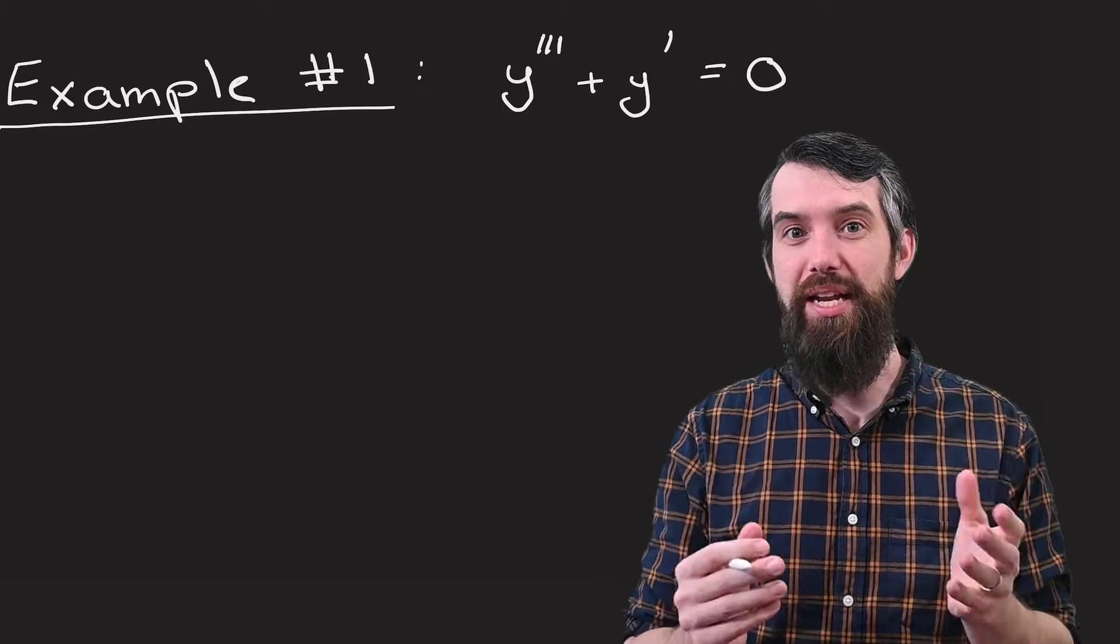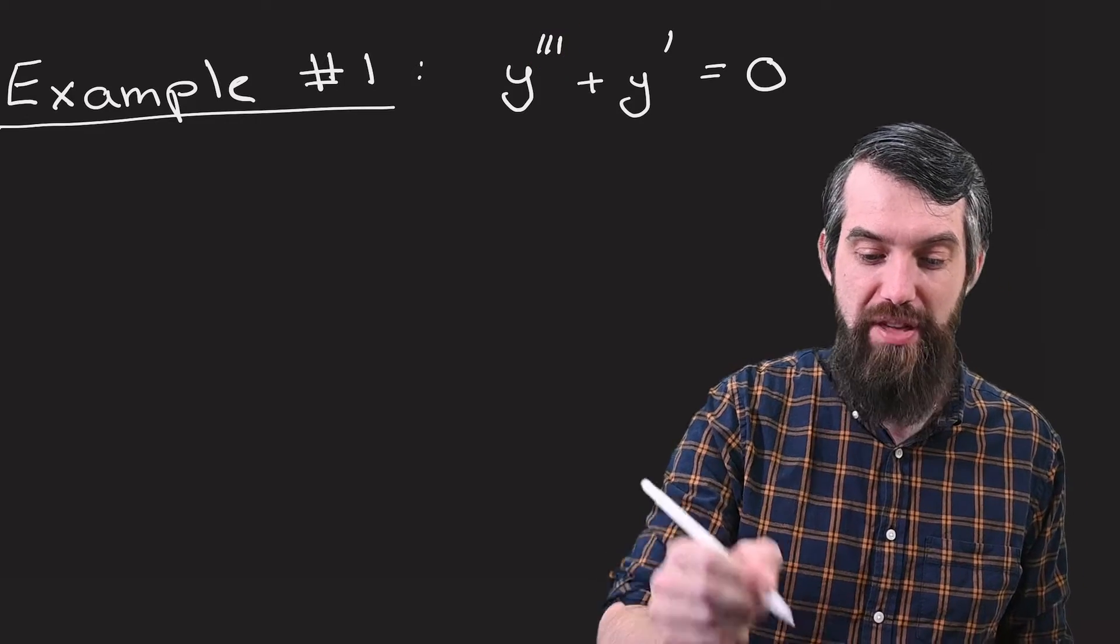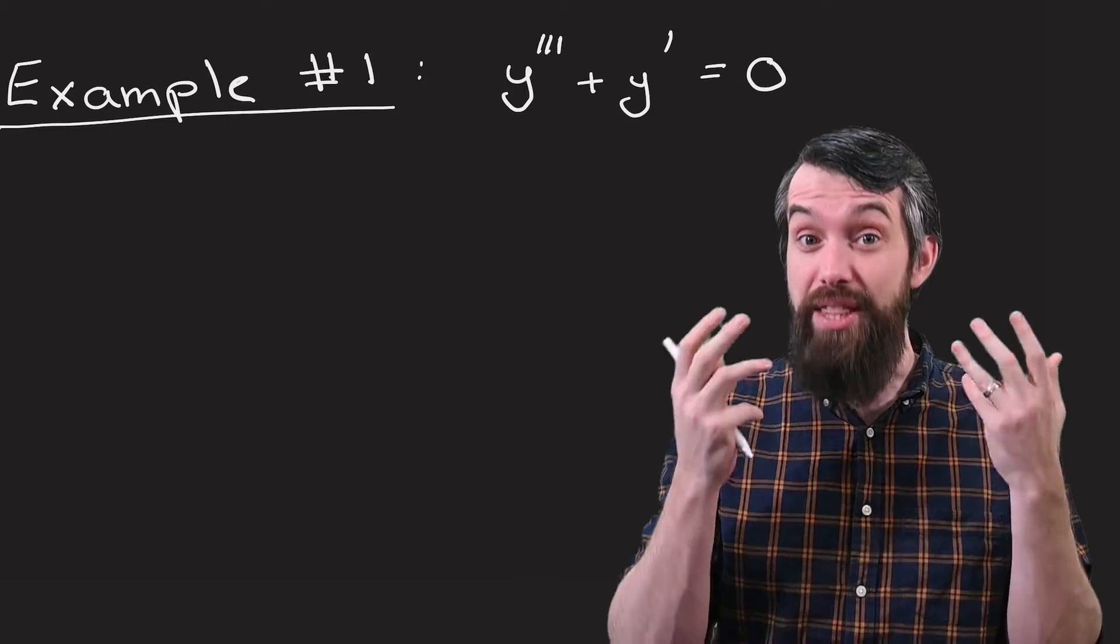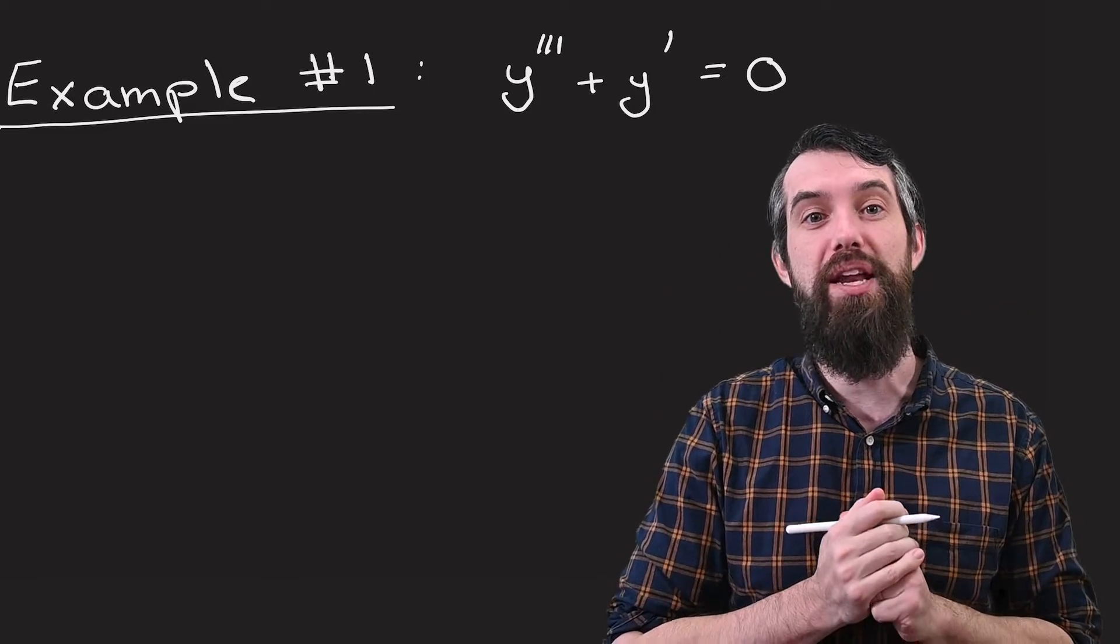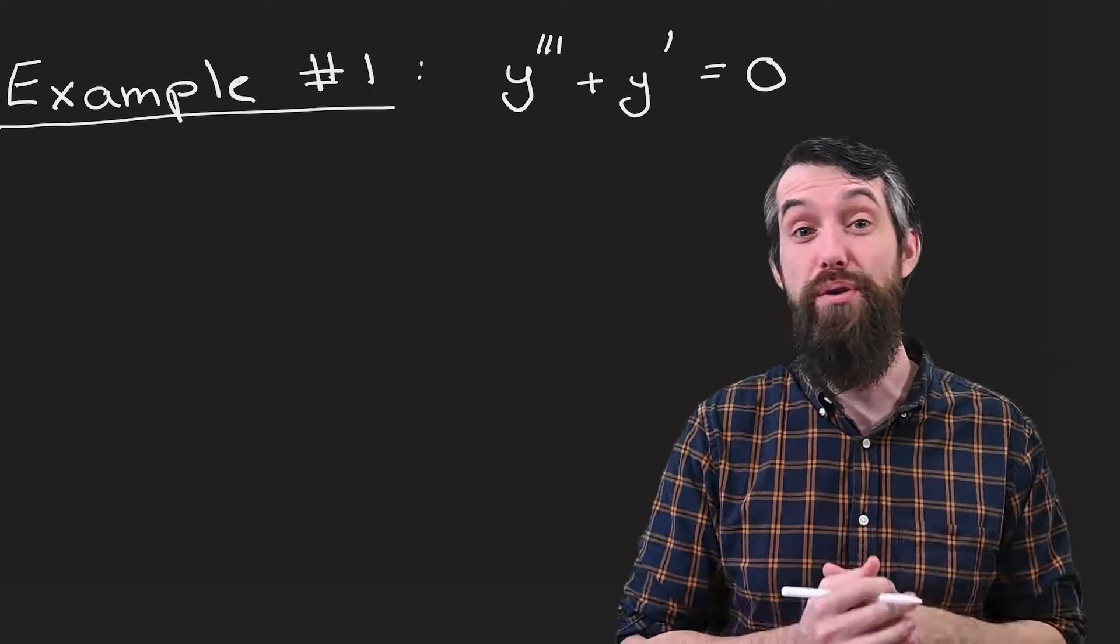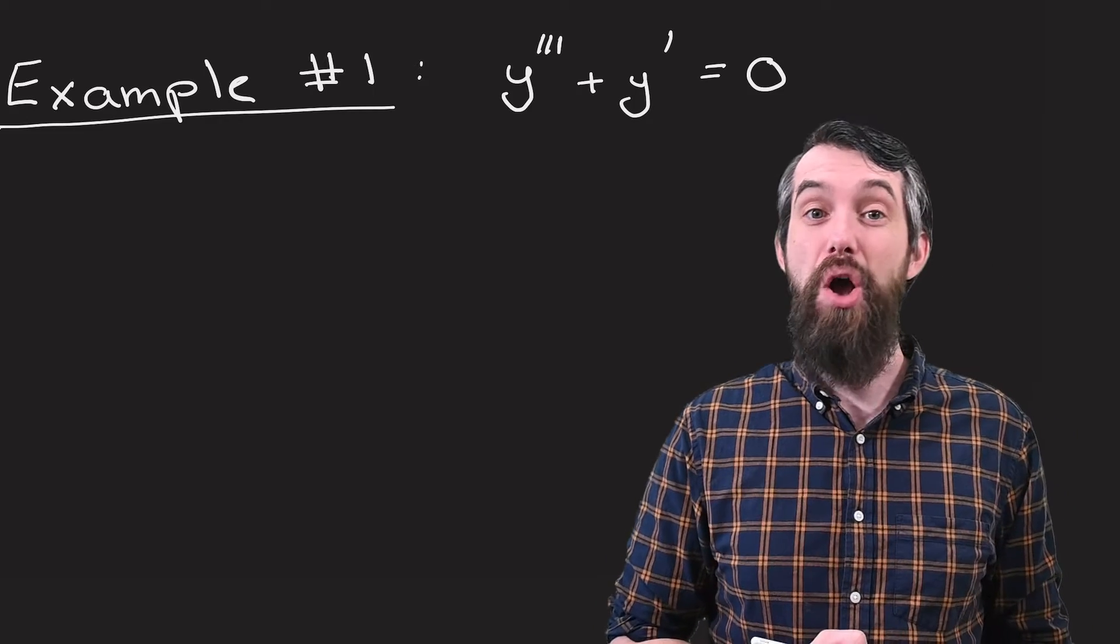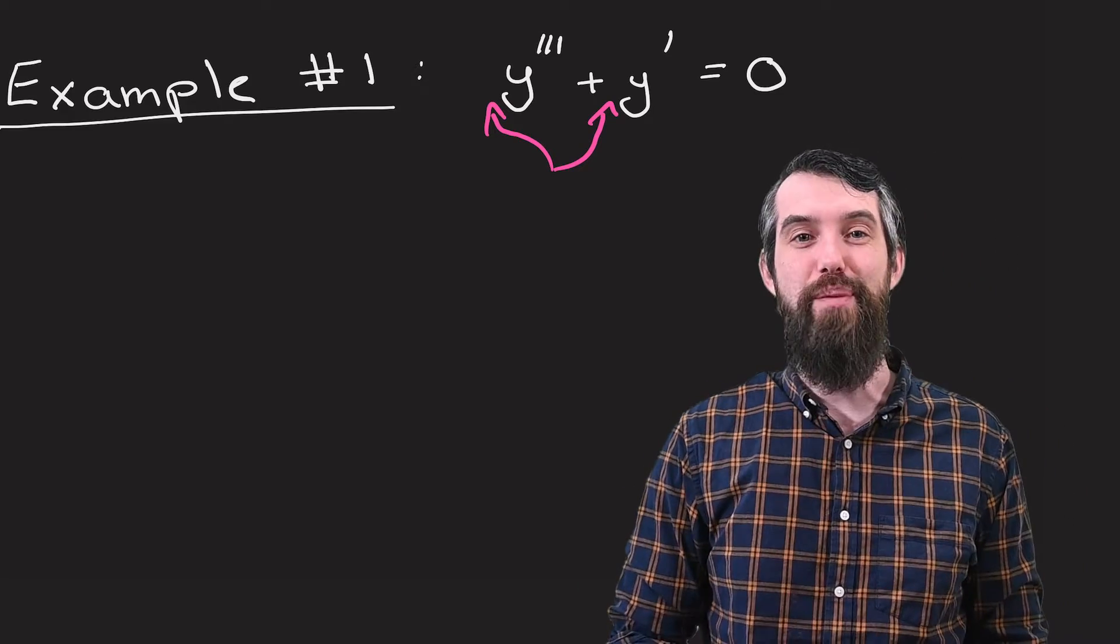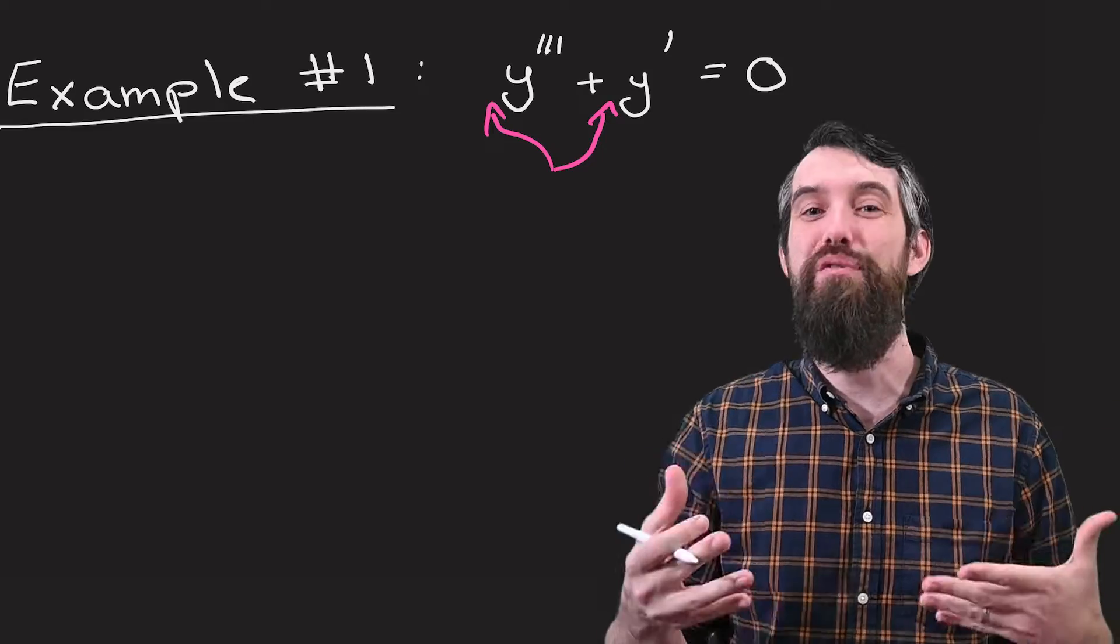So what do all those words mean? First of all, I said it was higher-order, and that's because of this y triple prime. The order of this differential equation is 3, and in my differential equations playlist thus far, we've only seen second-order differential equations. This is a constant coefficient differential equation because the coefficient of y triple prime and y prime are both one. You can also imagine there was a y double prime and a y here, but those just have coefficients of zero, which are also constants.